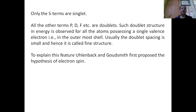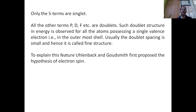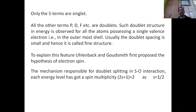About the doublet, we may say that only the s terms are singlet. In fact, even s terms have the property of being doublet but they do not show it in general — they show themselves as doublet only when exposed in a weak magnetic field. All other terms, p, d, f, are all doublet. Such doublet structure in energy is observed for all atoms possessing a single valence electron in the outermost shell. The doublet spacing is small and hence it is called fine structure. To explain this feature, Uhlenbeck and Goudsmit first proposed the hypothesis of electron spin. The mechanism responsible for doublet splitting is spin-orbit interaction. Each energy level has a spin multiplicity of 2s+1, where s equals one-half.